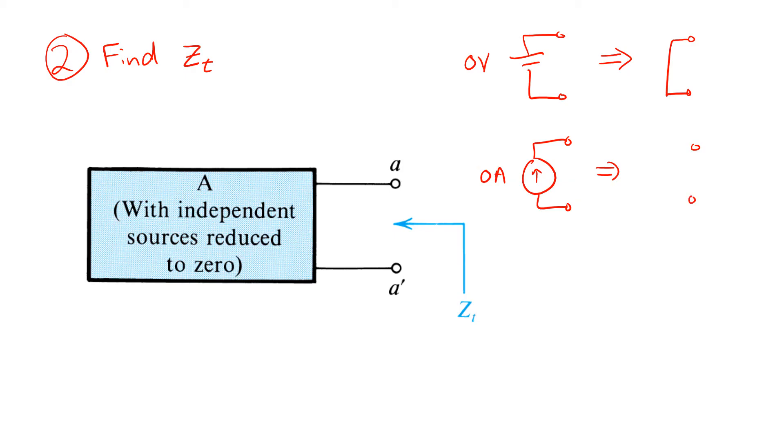So that's what we do. We take all the voltage sources in A, replace them with short circuits. All the current sources, replace them with open circuits. That is, we set all the independent sources to zero.